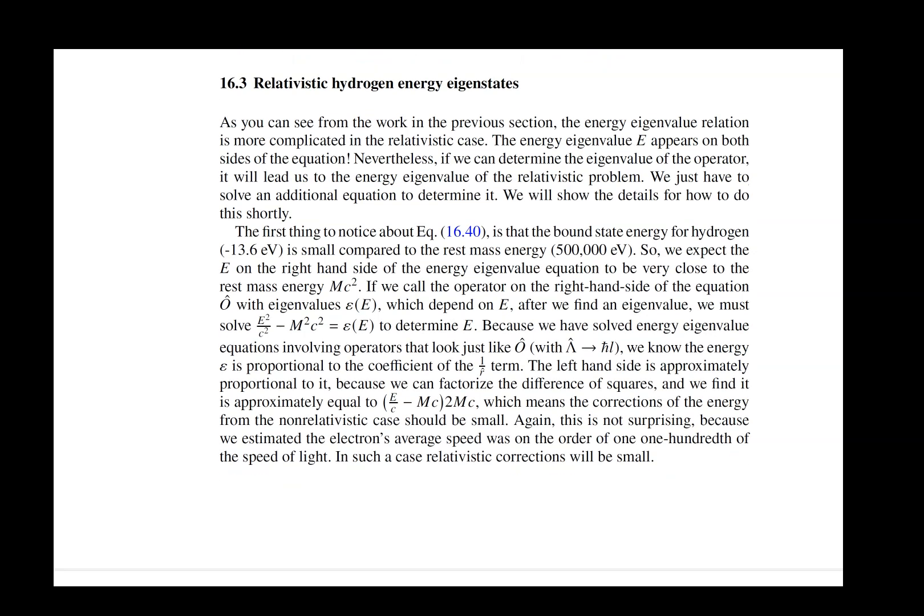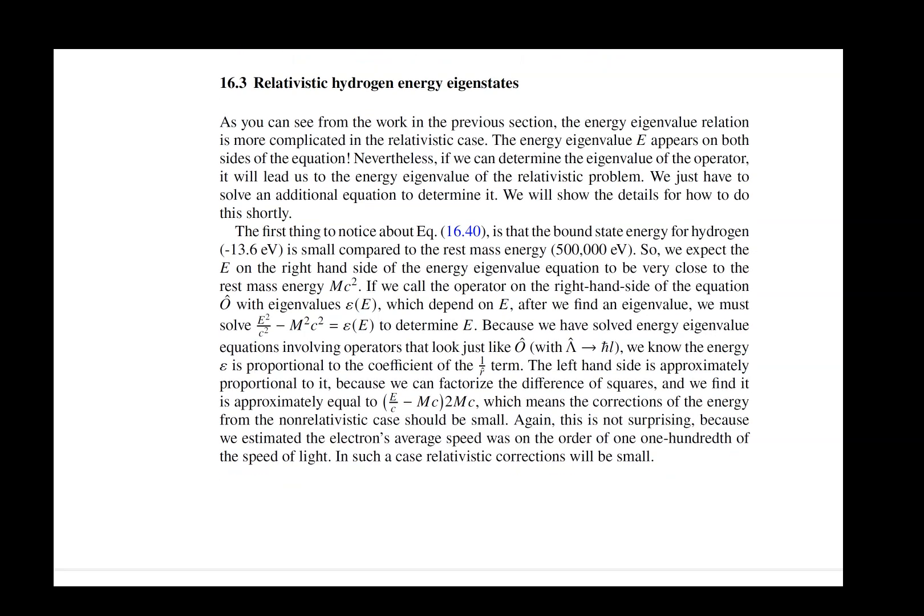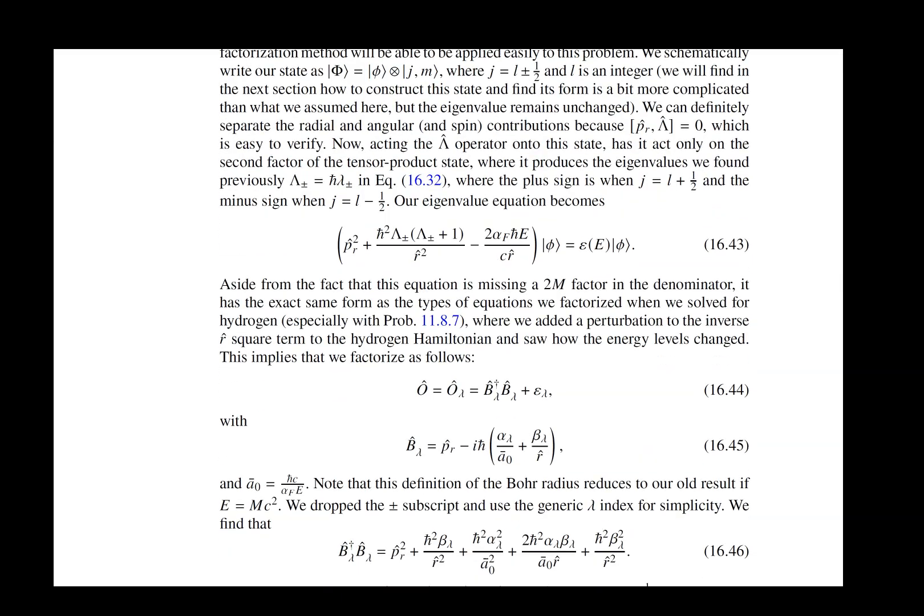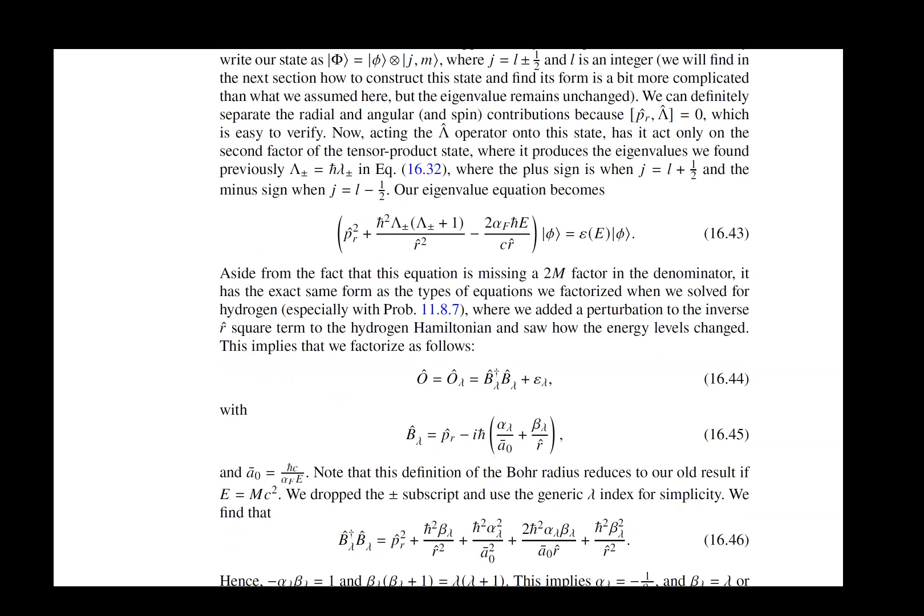Our next section is working out how we get the relativistic hydrogen energy eigenstates. We talk a little bit about energy scales, and we eventually are able to massage our Dirac equation, we actually did most of this work in the previous section, into a form that looks just like the equation that we solved using factorization previously.